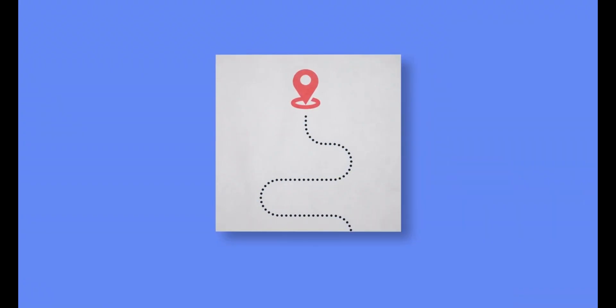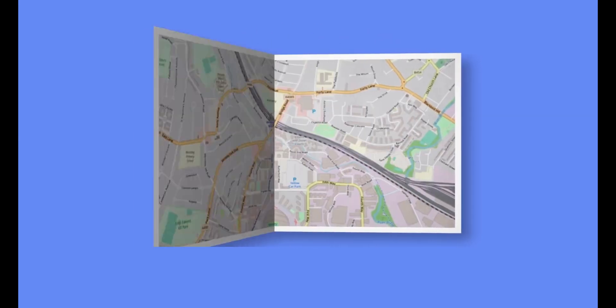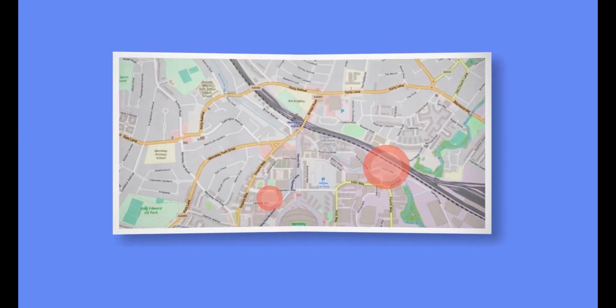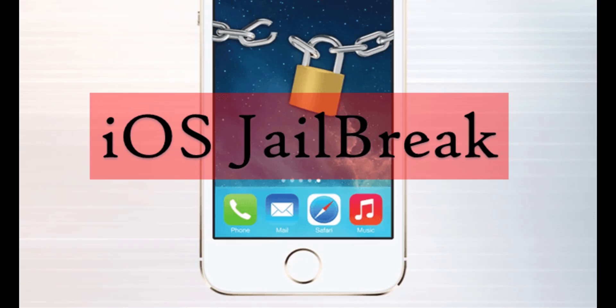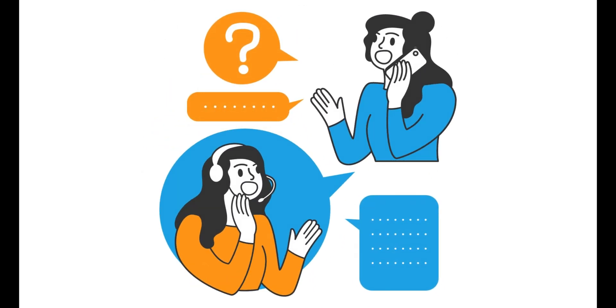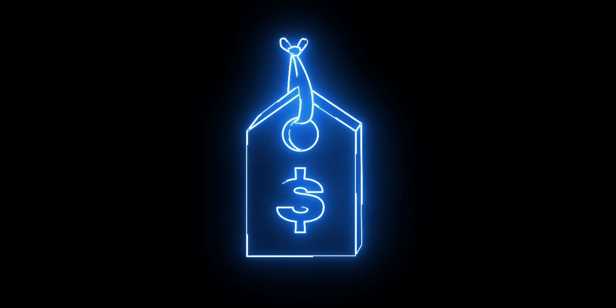For the most powerful features like real-time location tracking, creating safe and restricted zones on a map, and instant alerts when those zones are crossed, you will need to jailbreak the device. If you're not comfortable doing that, don't worry — mSpy's support team can guide you through it.